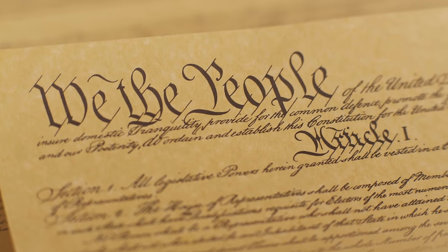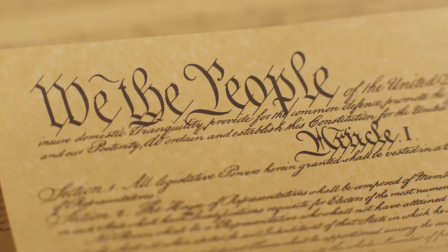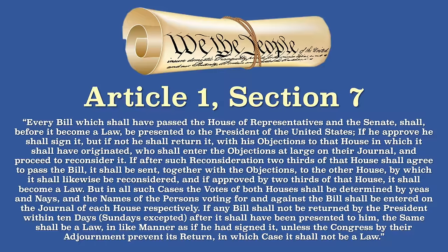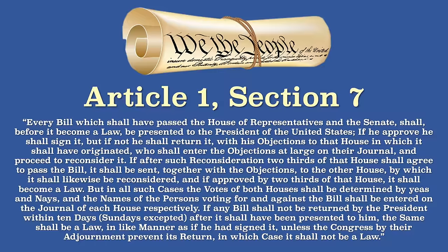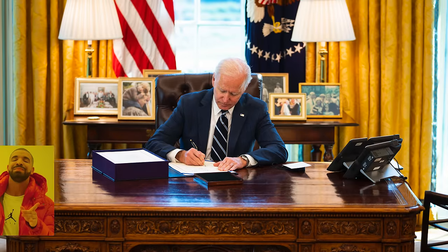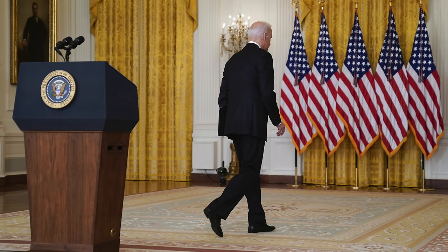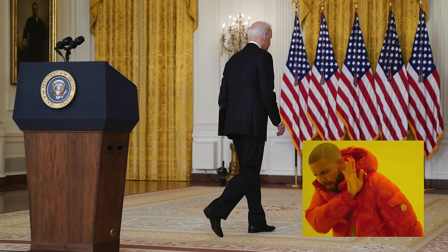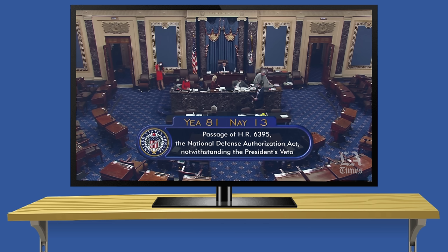The United States Constitution spells out exactly what the President can do. There's actually not much there. Article 1, Section 7 says a President can sign a bill — or wannabe law — if they approve of it, or veto a bill if they don't like it. That said, Congress can override that veto with a two-thirds majority vote in both houses. Article 2 of the Constitution spells out the rest.